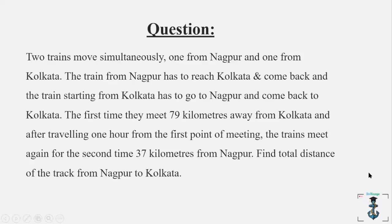The question says that two trains move simultaneously, one from Nagpur and one from Kolkata. The train from Nagpur has to reach Kolkata and come back, and the train starting from Kolkata has to go to Nagpur and come back to Kolkata. The first time they meet, they are 79 kilometers away from Kolkata. And after traveling one hour from the first point of meeting, the trains meet again for the second time, 37 kilometers from Nagpur. Find the total distance of the track from Nagpur to Kolkata.